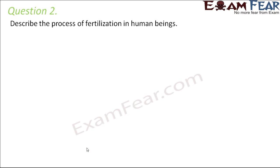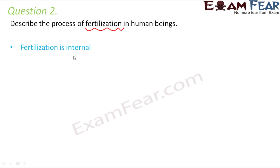Question number 2: Describe the process of fertilization in human beings. Fertilization is nothing but fusion between sperm and egg — the male gamete and the female gamete fuse together to form the zygote. In human beings, fertilization is internal, meaning it happens inside the body of the female.